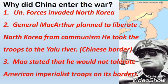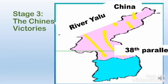Stage 3 of the Korean War was the Chinese victories. On the 25th of November, 200,000 Chinese soldiers attacked the UN troops. They had modern Soviet weapons and a fanatical hatred of America. On the 31st of December, another 600,000 Chinese soldiers joined the conflict. They inflicted heavy casualties and drove the UN troops south of the 38th parallel.